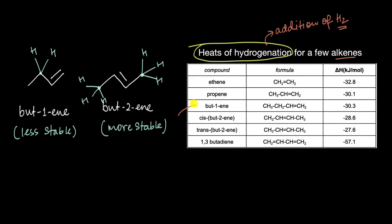The heat of hydrogenation of but-1-ene is −30.3 kilojoules per mole. This basically means that 30.3 kilojoules of heat is released when gaseous hydrogen is added to one mole of but-1-ene. If you compare this with the heat of hydrogenation of but-2-ene — both the cis and trans forms — you can see these values are slightly lower, around 28 kilojoules per mole. Let's find out how this relates to stability.